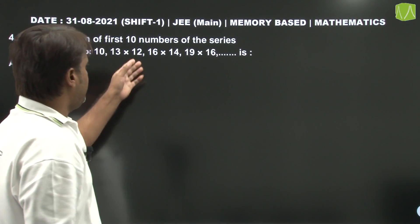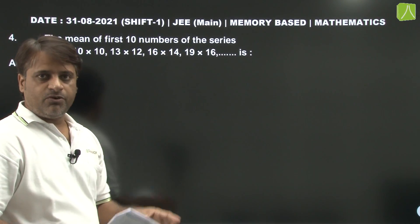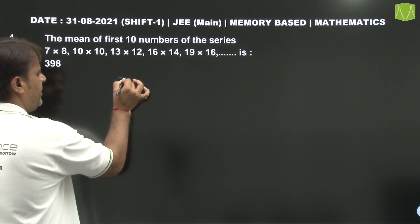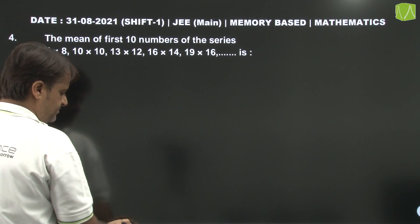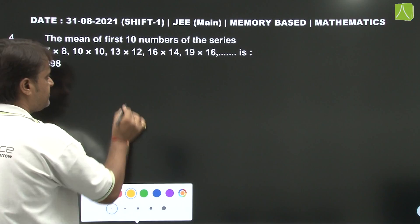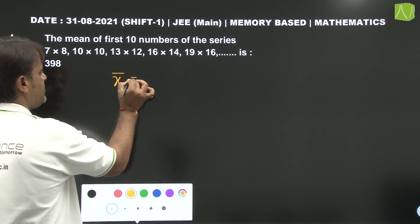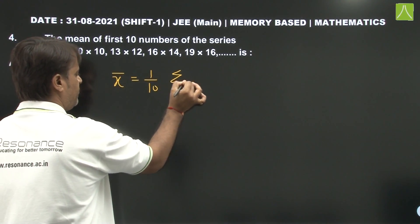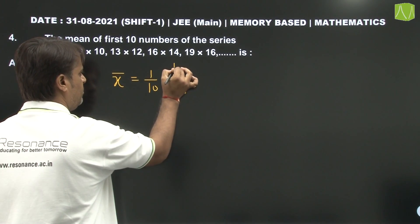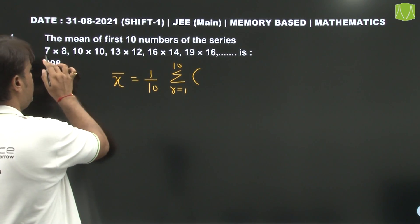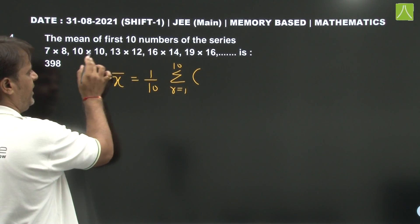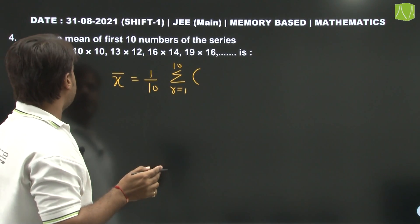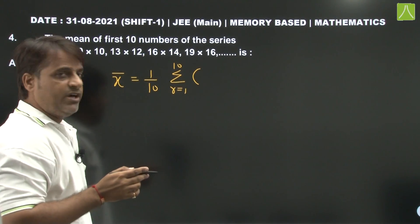Question number 4: The mean of first ten numbers of this series is to be calculated. So x bar equals (1/10) summation from R equals 1 to 10. The series has pattern 7, 10, 13, 16, 19 — an AP with first term 7 and common difference 3.